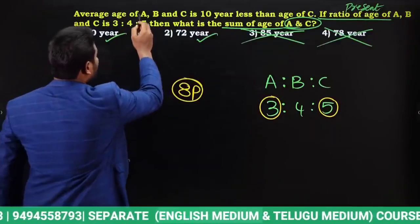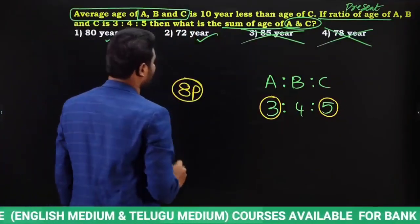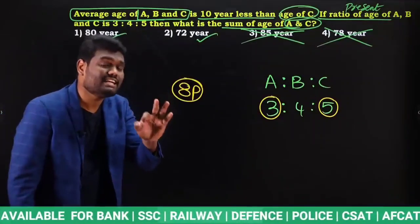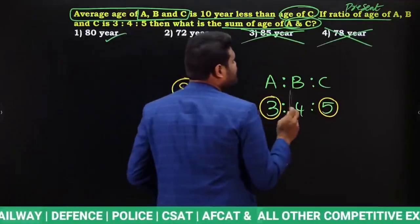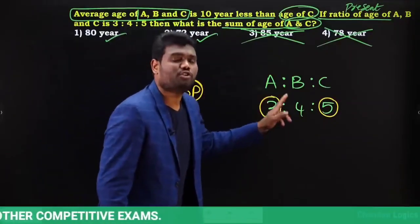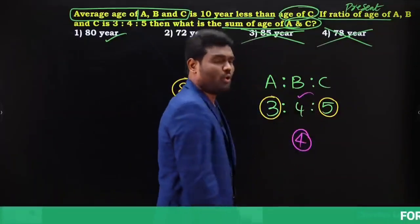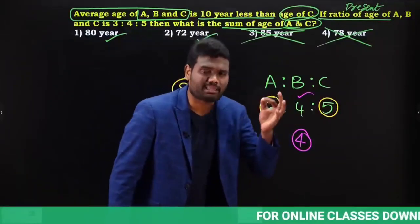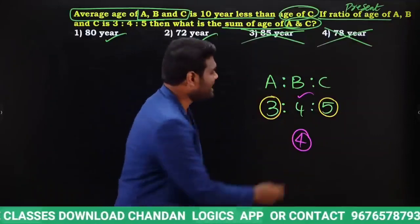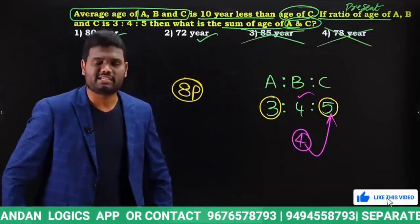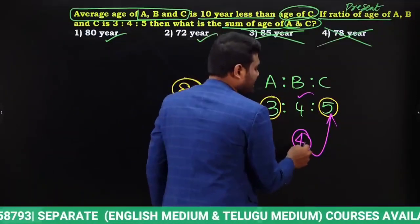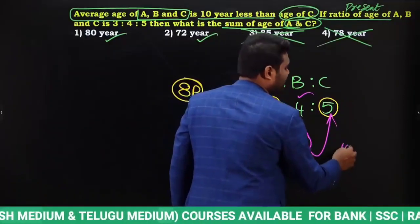The question says the average age of A, B, C is 10 years less than the age of C. The age ratio is 3:4:5, which is in arithmetic progression. When a series is in arithmetic progression, the average is the middle term. So the average is 4 parts, and C's age is 5 parts. The difference between average and C's age is 1 part, and that difference is 10 years.